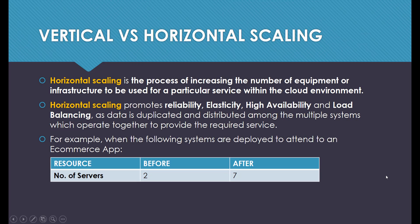Horizontal scaling, on the other hand, is the process of increasing the number of equipment or infrastructure to be used for a particular service within the cloud environment. Horizontal scaling promotes reliability, elasticity, high availability, and load balancing, as data is duplicated and distributed amongst multiple systems which operate together to provide the required service.